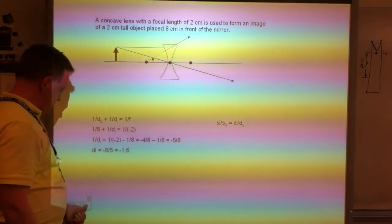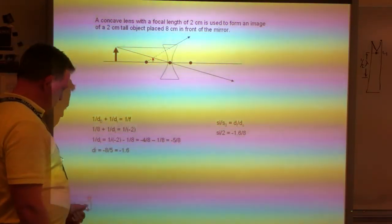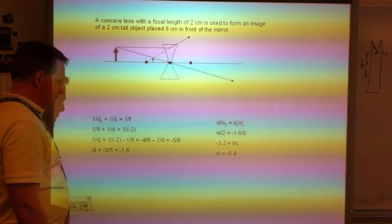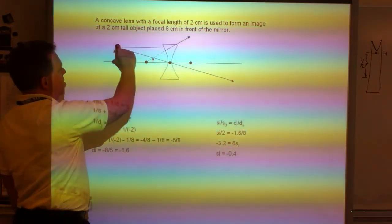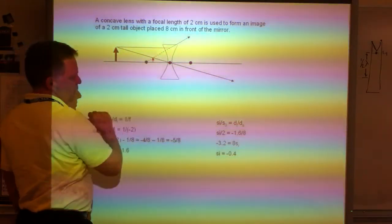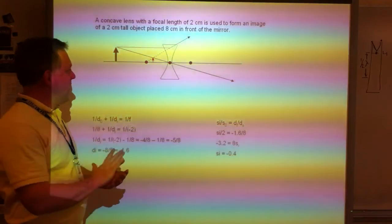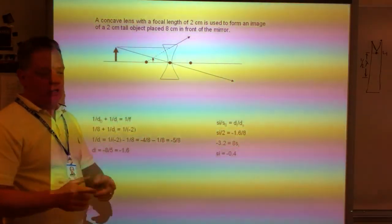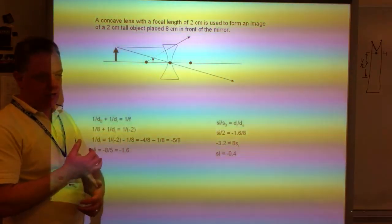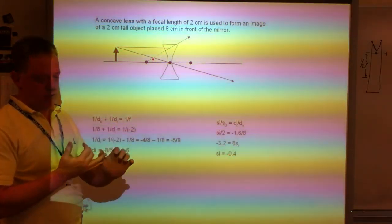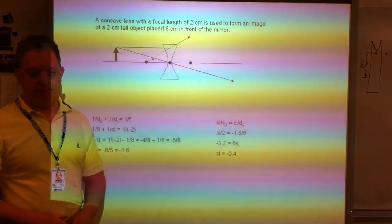To find the size, we use the magnification equation again. We plug in the values that we found, and we end up with SI is negative 0.4. It makes sense. This was 2 centimeters tall, and this is much smaller, so only 0.4. That's it for diverging lenses and mirrors. In your head, make sure that you know which types of mirrors and lenses are converging and which type of mirrors and lenses are diverging, and to be able to draw diagrams for either one.